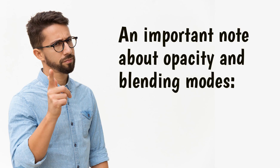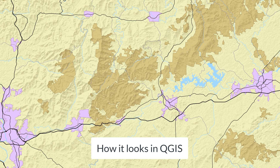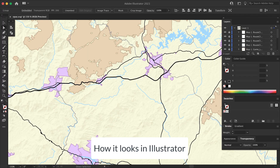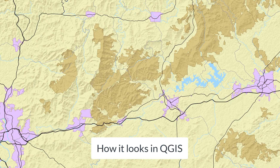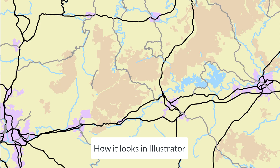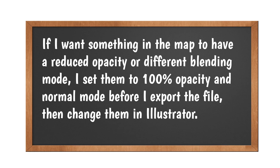An important note about opacity and blending modes. If you reduce the opacity of anything in QGIS, the reduced opacity effect will carry through, but there's a catch: Illustrator will consider the layer to be at 100% opacity, meaning you can't increase the opacity of the object in Illustrator — you can only decrease it. If any object or layer is set to a blending mode other than Normal, the SVG export process changes it to Normal, but this can be easily reset in Illustrator. Because of these things, I recommend setting opacity to 100% and blending mode to Normal before exporting, and making those adjustments in Illustrator.